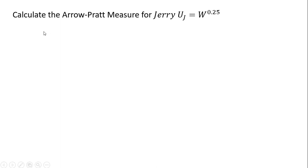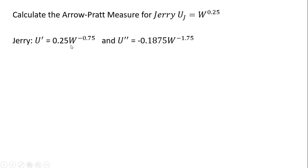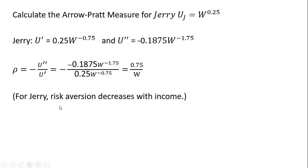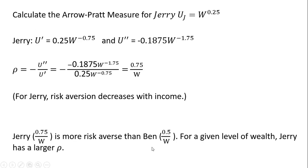Another individual here, say Jerry. His utility function looks like this — wealth raised to the 0.25 power. We'll get the first derivative and then the second derivative. Forming our measure of risk aversion, once again the minuses cancel, and we're left with 0.75 divided by w. For Jerry, who is risk averse just like Ben, his level of risk aversion will decrease with income. Overall, Jerry is more risk averse than Ben — for a given level of wealth, Jerry has a larger rho.